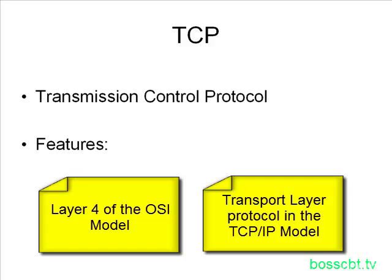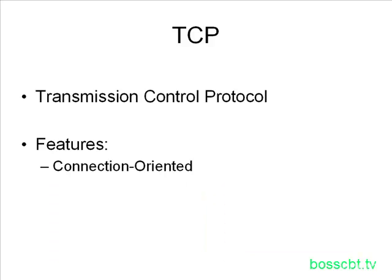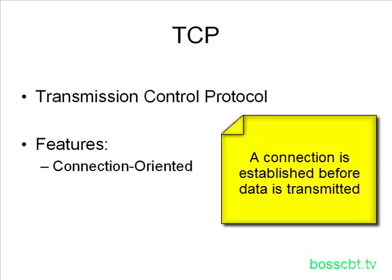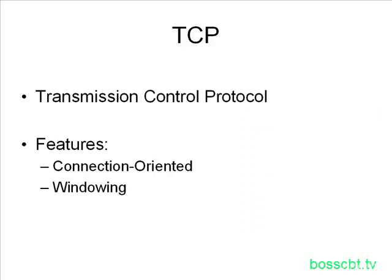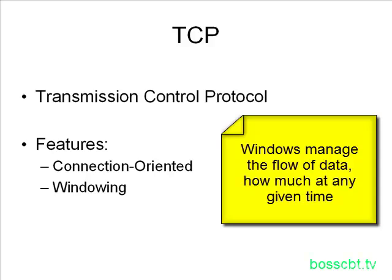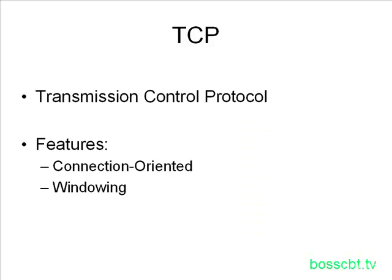TCP has a couple of features we will get acquainted with in the next couple of videos. The first one is TCP is a connection-oriented protocol. Before any data is transmitted between two devices, a connection is established and the parameters of that connection are negotiated. TCP also uses a concept known as windowing, which is a form of flow control. By using this technique of windowing, two devices using TCP can control how much information is sent between them at any given time — it can back off and send less, or send more. It's dynamic and controls the flow of data sent at a given time.